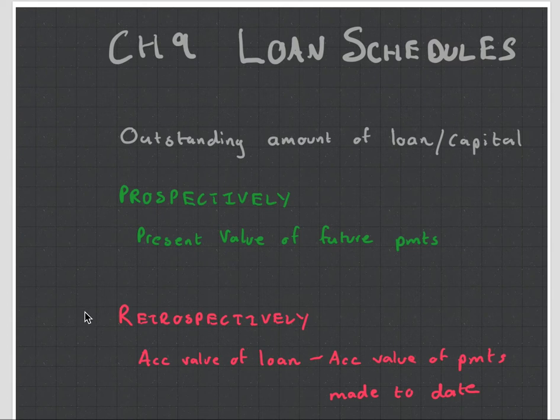Alternatively, you can calculate your loan retrospectively, which means calculating it right at the end of the timeline. And to do that, you accumulate the value of the loan and then you subtract all the accumulated values of the payments made to date.